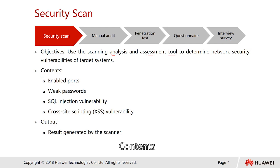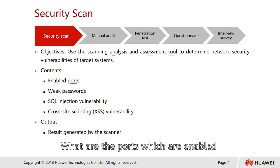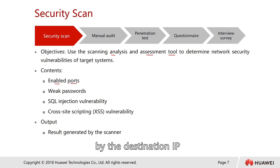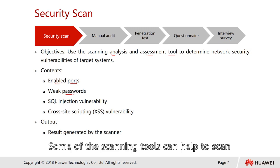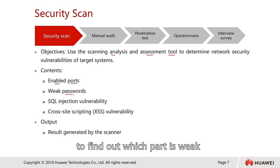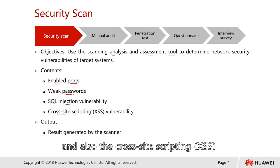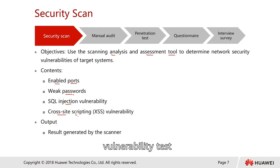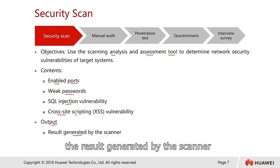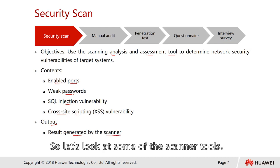The contents typically include what ports are enabled by the destination IP, what weak passwords exist — scanning tools can scan the internal system to find weak passwords — and also performing SQL injection vulnerability tests and cross-site scripting (XSS) vulnerability tests. The output is typically the result generated by the scanner.